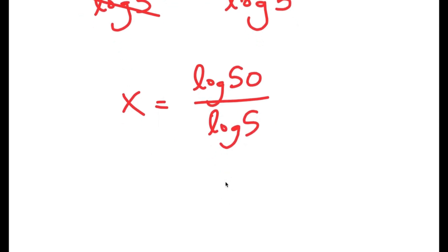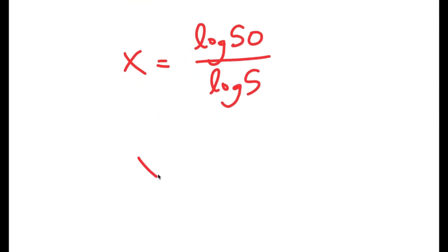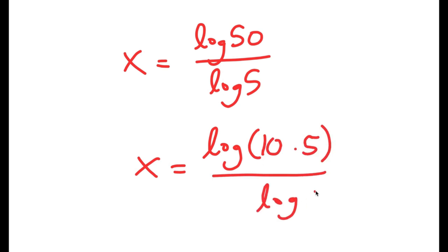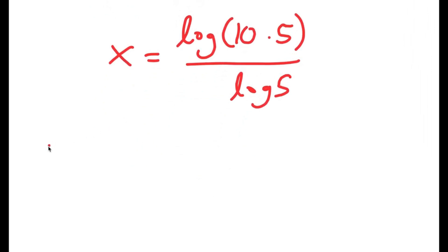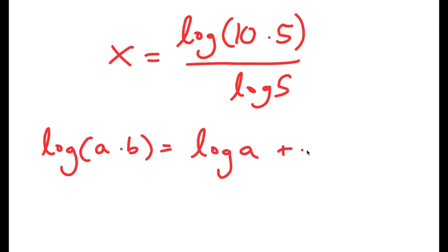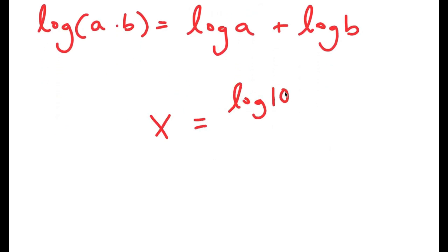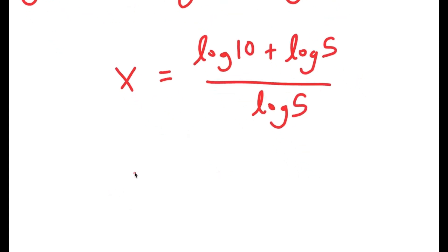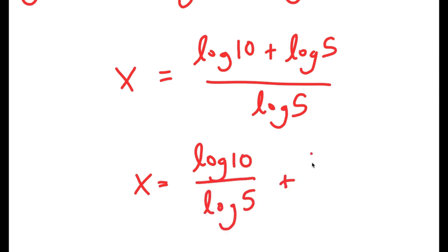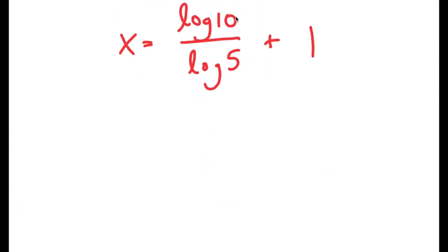Let's simplify this a little. Log 50 is the same thing as log of 10 times 5. Another property of logarithms states that log of a times b is equal to log a plus log b. So this turns into log 10 plus log 5 over log 5, which is the same thing as log 10 over log 5 plus log 5 over log 5, which is just 1. And log 10 equals 1, so I get x equals 1 over log 5 plus 1.